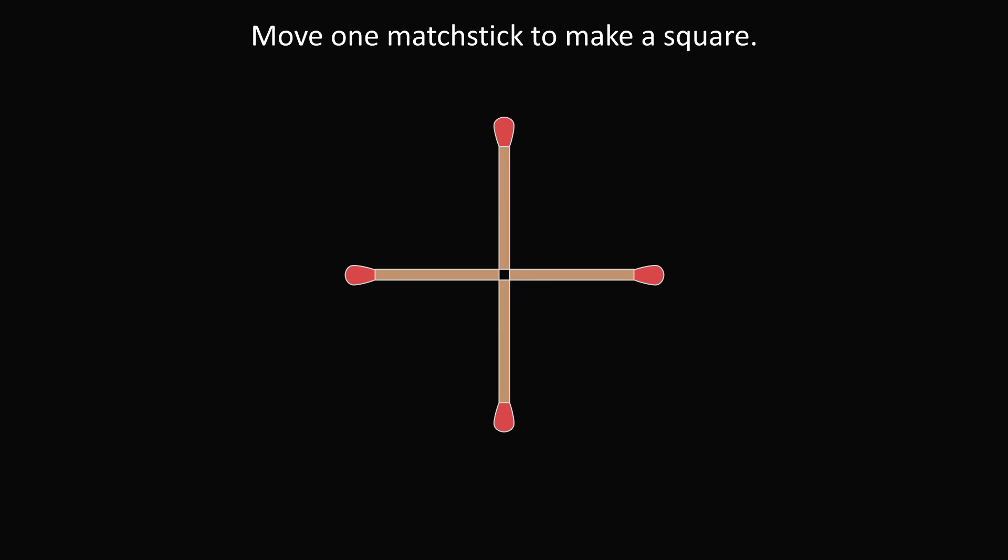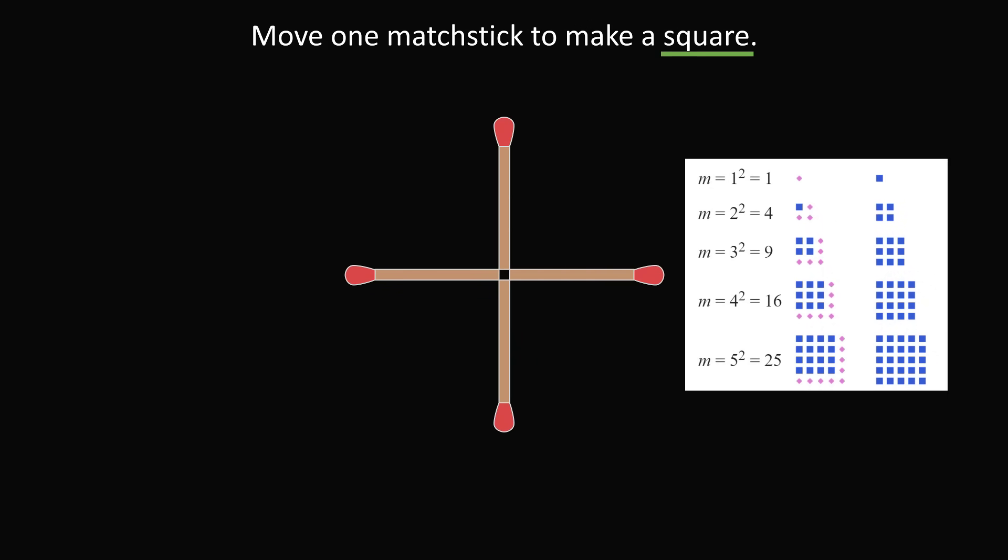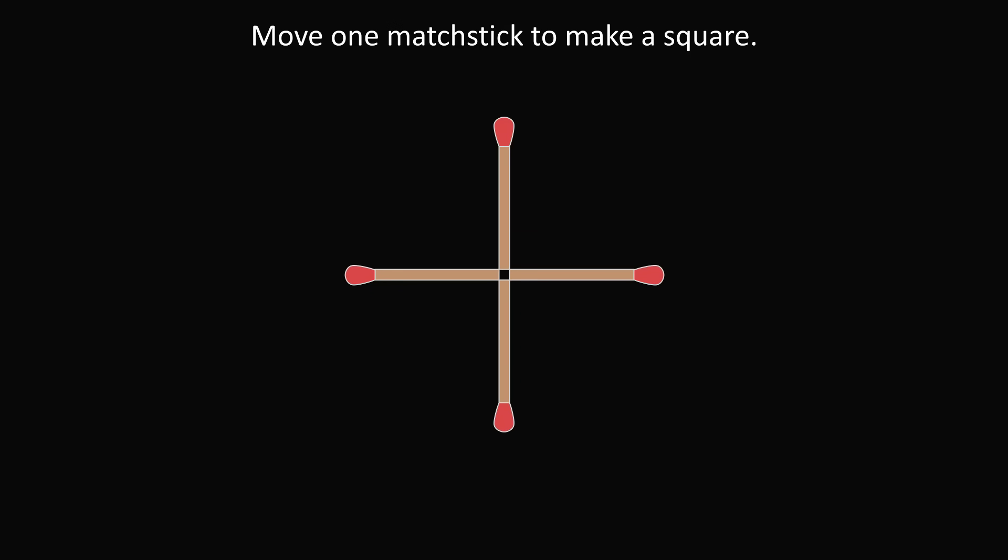But since we're thinking outside the box, here's another creative solution. We also refer to squares in terms of square numbers. 1 squared is 1, 2 squared is 4, 3 squared is 9, 4 squared is 16, and so on. And we do call the numbers 1, 4, 9, 16, 25 as squares. So, let's say that 4 is the square that we are going to form. So, we'll go ahead and take these four matchsticks. We will move exactly one matchstick, and we will form the number 4, which will be a square. And that's another possible answer.